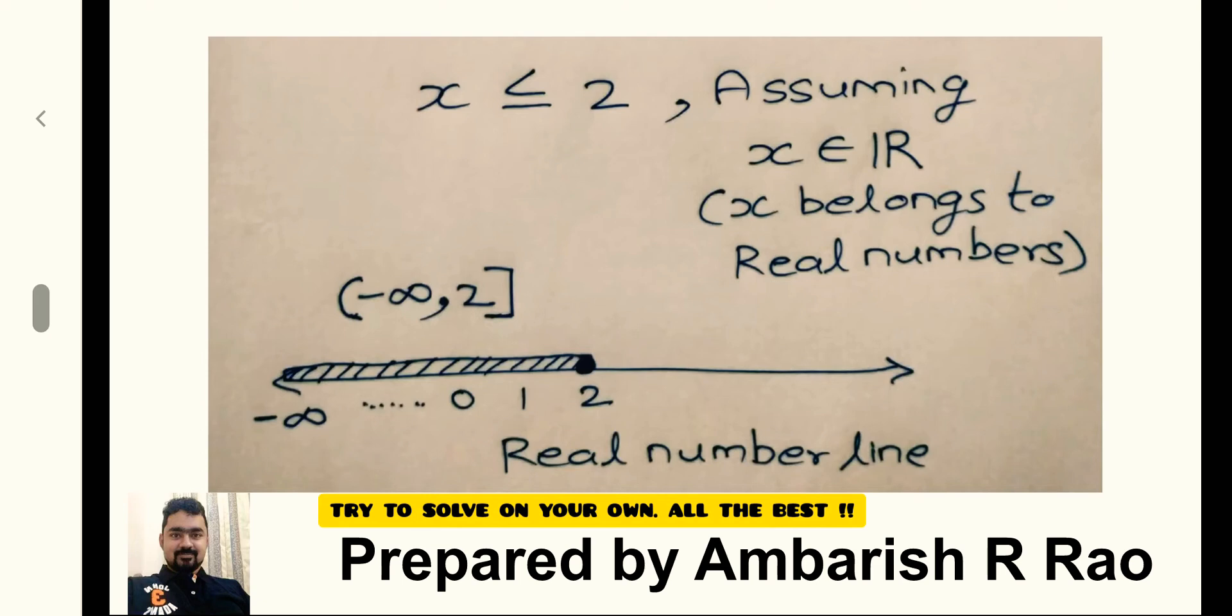That can be shown on a real number line also, where you can see the shaded portion which includes 2 also.